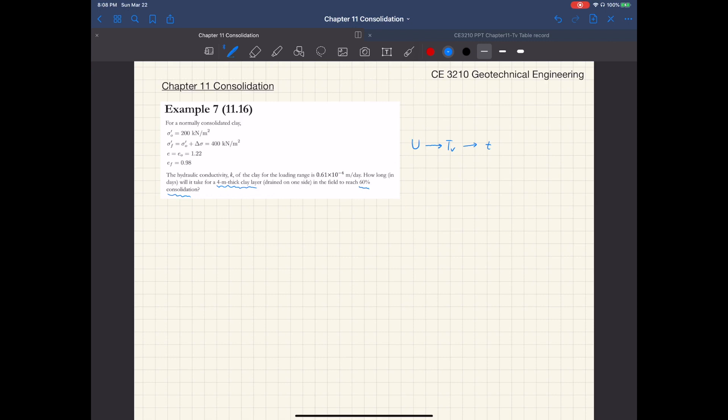The difference here is that instead of directly giving you the coefficient of consolidation, you are given consolidation test data from the lab which consists of initial effective stress, final effective stress, and the corresponding void ratio and permeability. We're going to use this lab test data to calculate the coefficient of consolidation, and once we have it, then we can just follow what we did for examples 4 and 5 to figure out the time.